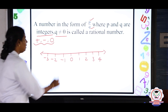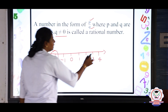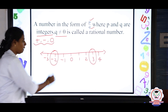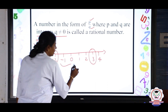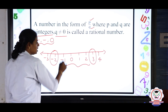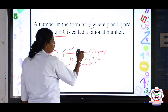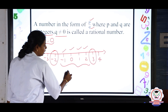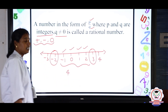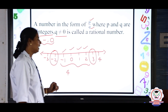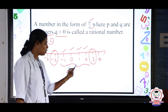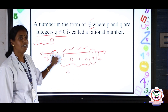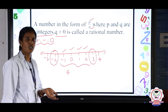Now, in between minus 2 and 3, how many integers are there? In between minus 2 and 3, the integers are: minus 1, 0, 1, and 2. So, in between minus 2 and 3 there are 4 integers. Likewise, we can find rational numbers too.